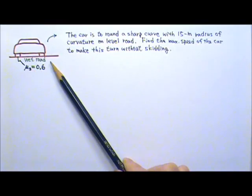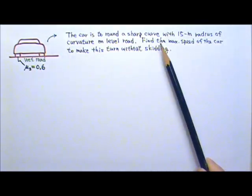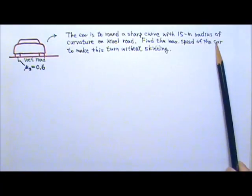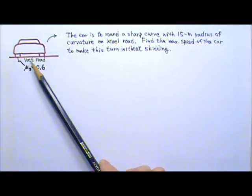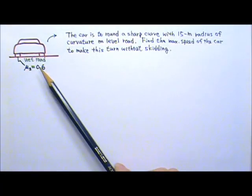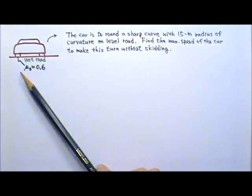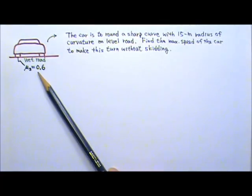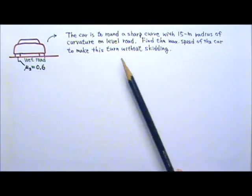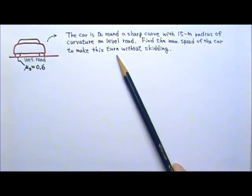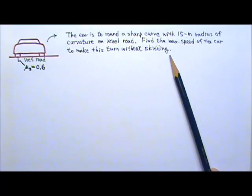This car is to round a 15-meter radius of curvature sharp curve on a level road. The road is wet and the coefficient of static friction between the tires and the road is 0.6. Find the maximum speed of the car to make this turn safely without skidding.